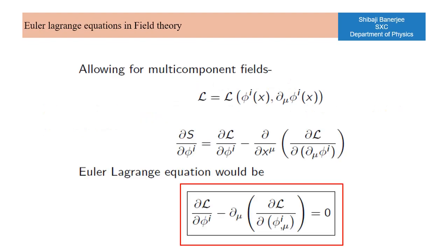Fields like the Maxwell field or the Dirac field are multi-component in nature. For these fields there would be one equation per component and that is what the index i stands for.